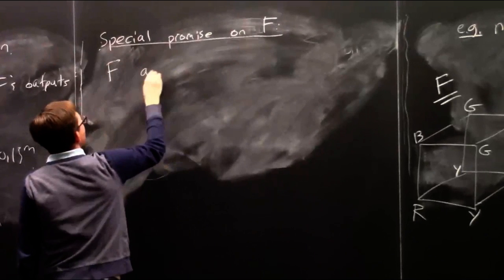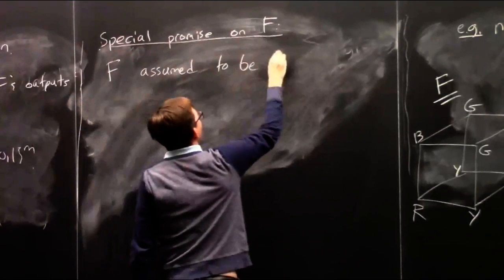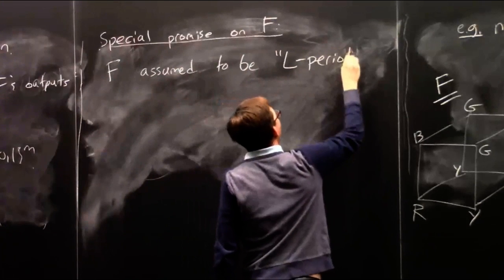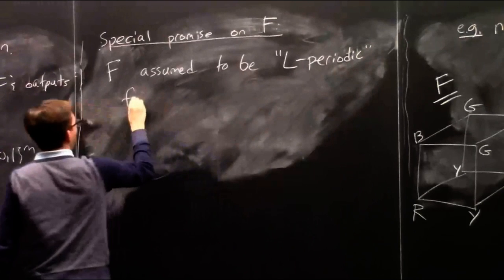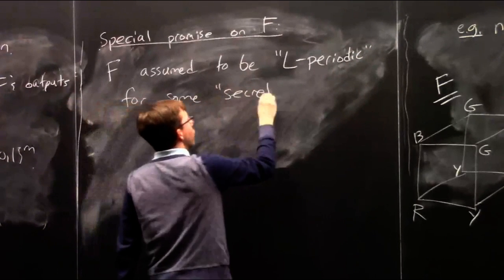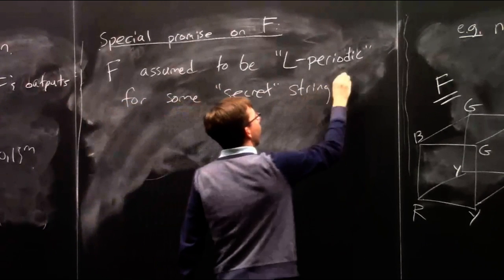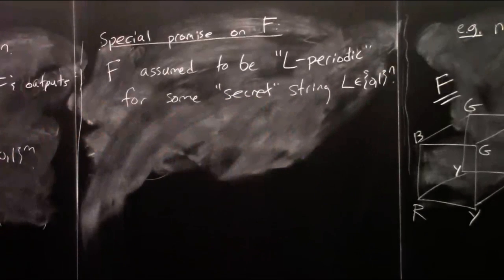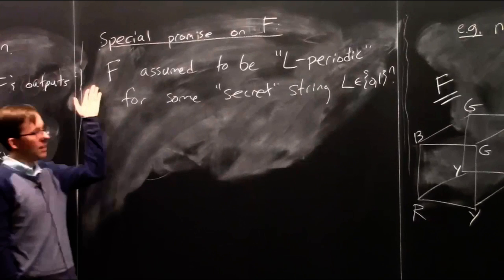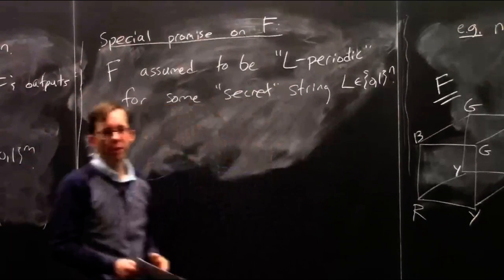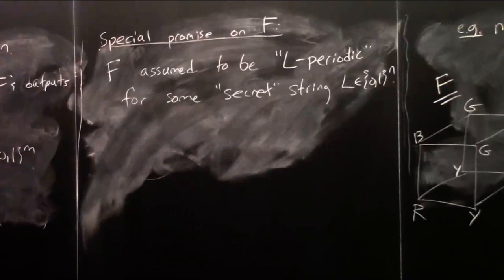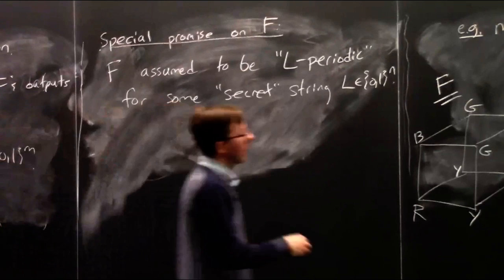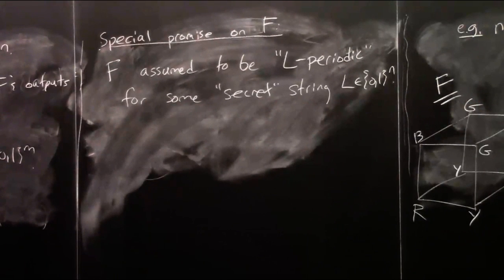F is going to be assumed to be L-periodic for some secret string L in {0,1}^n. Each of these capital F's has some secret n bits of information — that's what you're trying to figure out. But it's not that f is an XOR function; f is going to be, quote, periodic. In this example, L is 1,0,1.